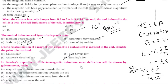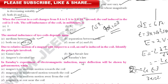In Faraday's experiment on electromagnetic induction, more deflection will be shown by the galvanometer when the magnet is in accelerated motion towards the coil — because the flux is changing faster with respect to time at that position.